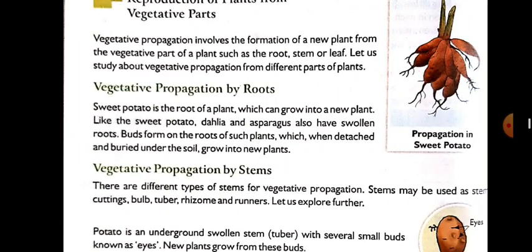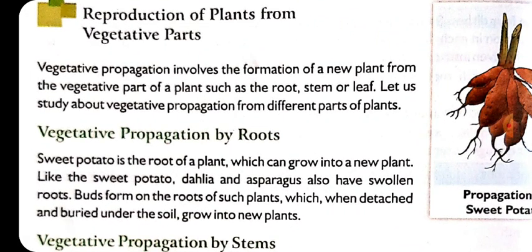The next topic we are going to start is reproduction of plants from the vegetative parts. So far we have studied reproduction from seeds. We know that a plant can be grown by two methods — one is by the seeds, which we have already done, and the other is by the vegetative parts. Vegetative parts are the parts of the plant which can be grown into a new plant, like some special parts such as the leaves.